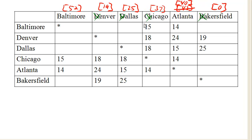From Atlanta, we could go to Baltimore, which would be 40 plus 14 — that's 54, which is longer than the current route of 52. We don't want to go back to Denver, Dallas, or Chicago either. So we are now done. The shortest route from Baltimore to Bakersfield is going to have a total time of 52 hours.